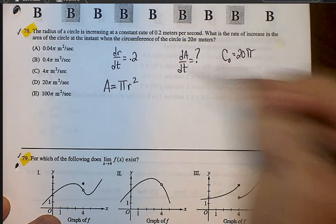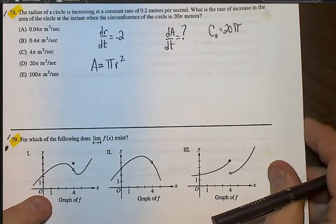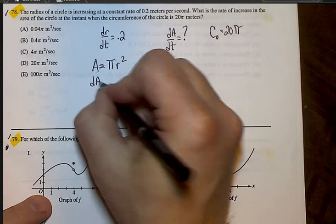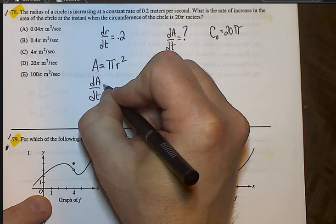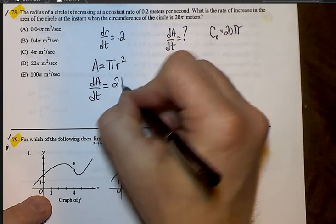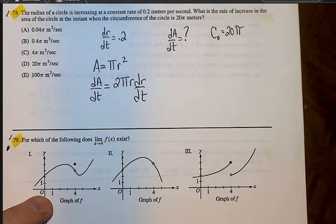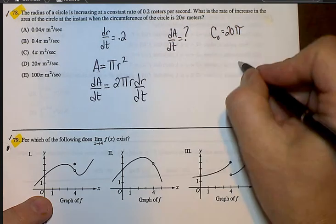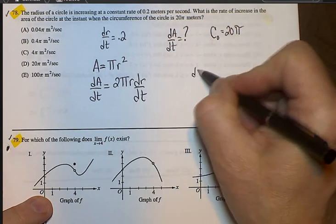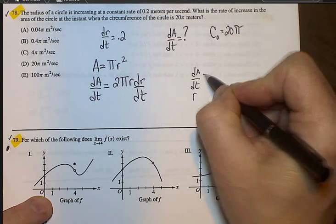So the time derivative. So the derivative of A is dA/dt, and that's going to be equal. Now the derivative of πr² is going to be 2πr dr/dt. Okay, so if you take a look at all the things we need, according to this, we need a dA/dt. We need a dA/dt, we need an r, and we need a dr/dt.